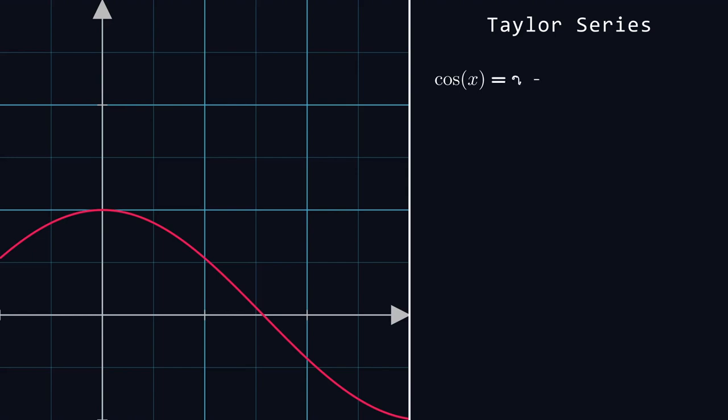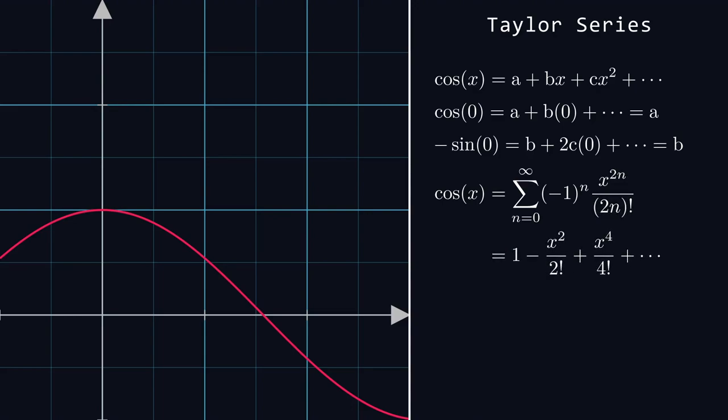So for example, if we wanted to represent cosine of x as some polynomial, we need to find values for a, b, c, and so on. Evaluating cosine of 0, we find that a should be 1. Taking the derivative of both sides and evaluating at 0, we find that b should be negative sine of 0, and so on. This process can be compactly described as a Maclaurin series. And sure enough, as we add more terms to the expansion, our approximation approaches the cosine curve.